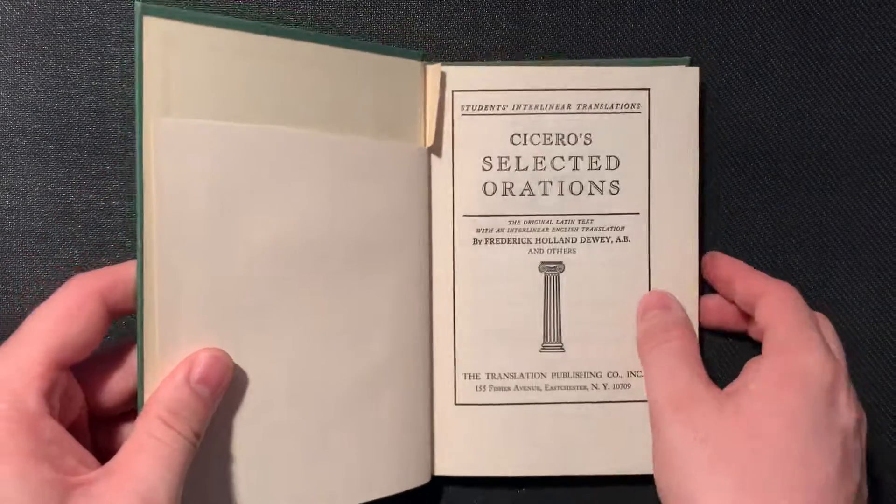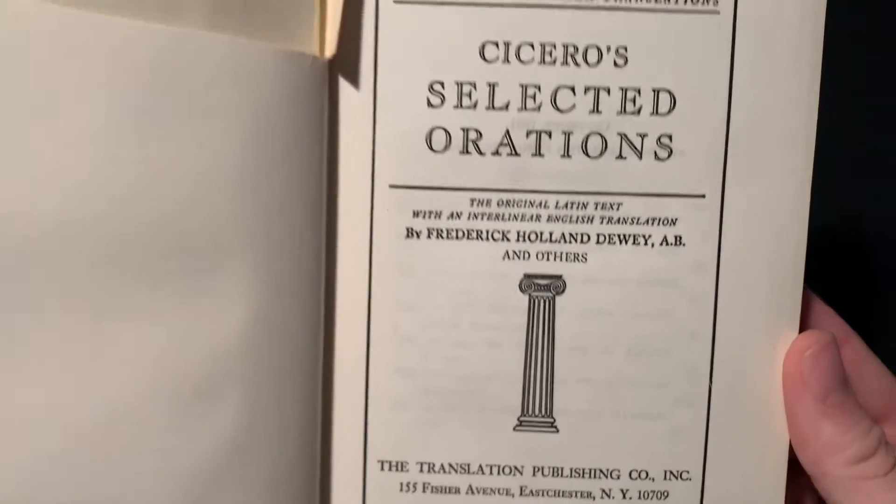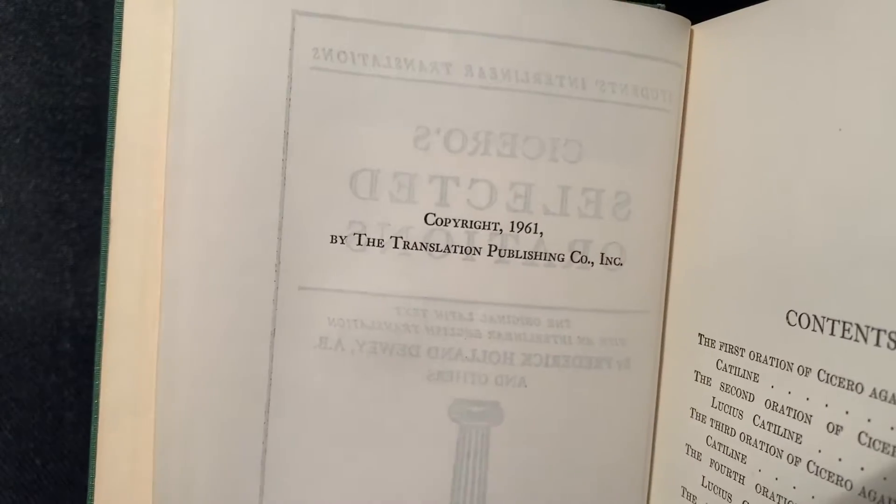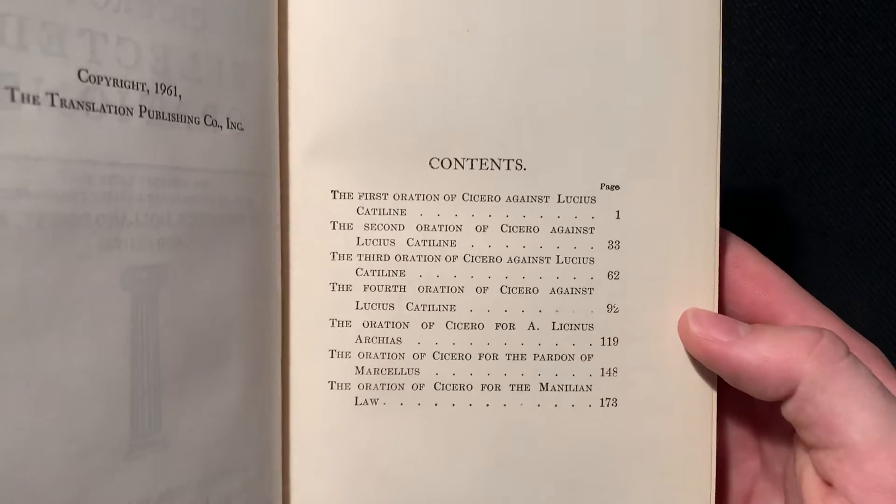So this is Cicero's Selected Orations, published by the Translation Publishing Company, which I guess kind of explains what they're doing. This is from 1961, although I've seen books in this format that are a bit older.